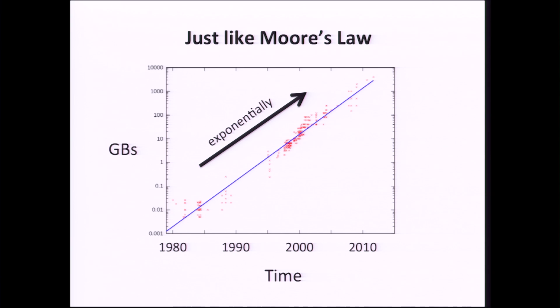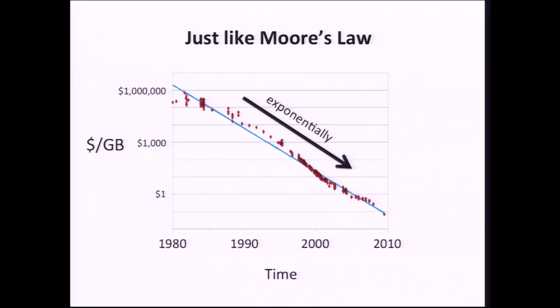Luckily for us though, data storage has followed pretty much the same Moore's law that we see with transistors and computing chips. Usually people don't show these plots for data storage but it has done the same thing. So you look over time, the amount of gigabytes we can put in a hard drive has grown exponentially over time. And similarly, the cost per gigabyte has shrunk exponentially over time.